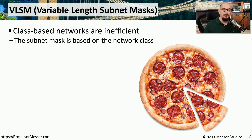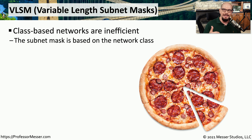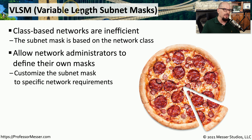Prior to 1993, your subnet mask was set automatically based on what your IP address happened to be. This is a class-based subnetting method that we very quickly found was not flexible enough for today's modern networks. Instead, today we use what's called VLSM, or variable length subnet masks, where we, the network administrators, can determine what the best subnet mask might be for our particular network.